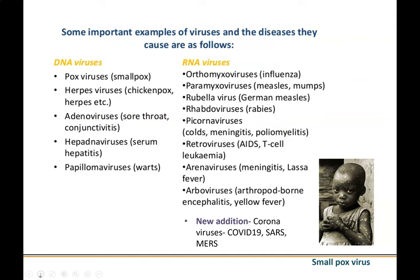Here's a list of some example viruses — you don't need to memorize this — just a list of DNA versus RNA viruses. You might recognize some of these: chickenpox, smallpox, herpes, sore throat, warts, flu, rabies. And of course now we have the COVID-19 virus, from the coronavirus group, which is in the news right now. There are many types of viruses including AIDS and yellow fever. There are many different types and they can be both DNA or RNA.